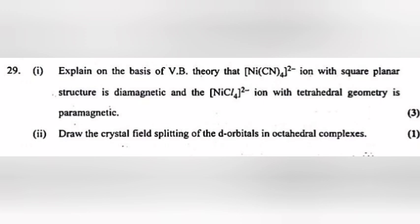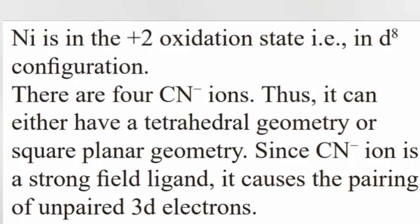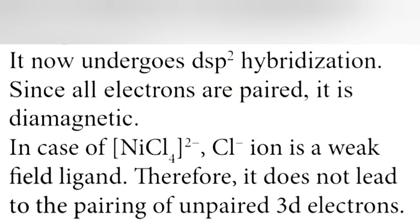Question 29, Part 1: Explain on the basis of valence bond theory that [Ni(CN)4]2- ion with square planar structure is diamagnetic and [NiCl4]2- ion with tetrahedral geometry is paramagnetic. Answer: Ni is in the +2 oxidation state, that is in d8 configuration. There are four CN- ions. Thus, it can either have a tetrahedral geometry or square planar geometry. Since CN- ion is a strong field ligand, it causes the pairing of unpaired 3d electrons. Since all electrons are paired, it is diamagnetic.